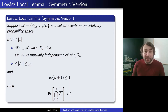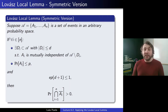So this was the Local Lemma wherein we have events that are somehow mostly independent, as captured by this idea of mutual independence, and each of them is rather low in probability. Then we get this desired outcome of avoiding all the bad events.